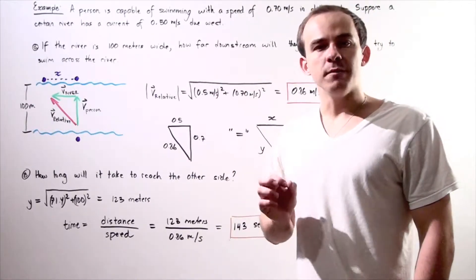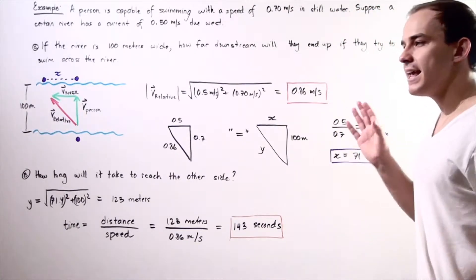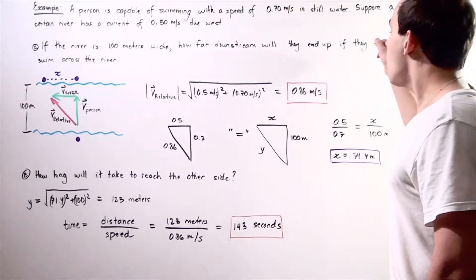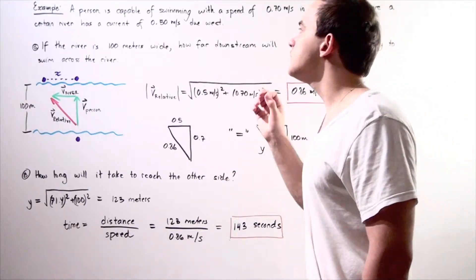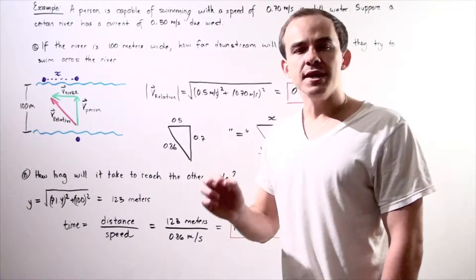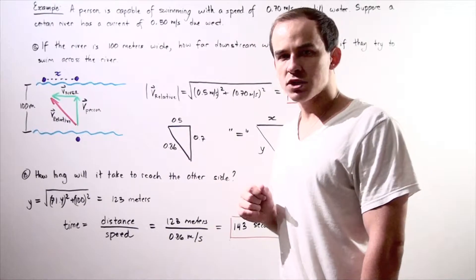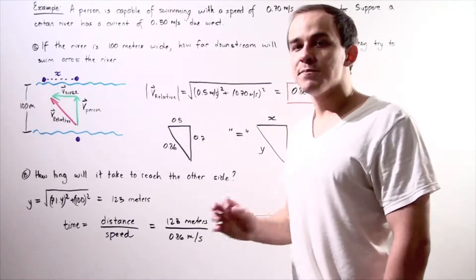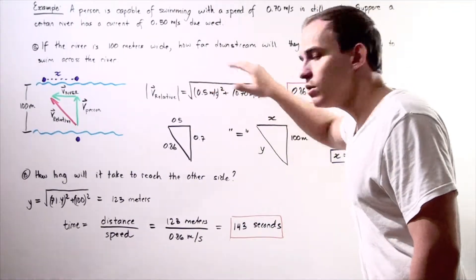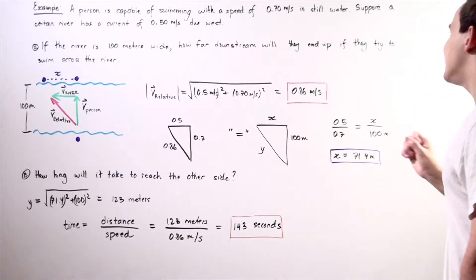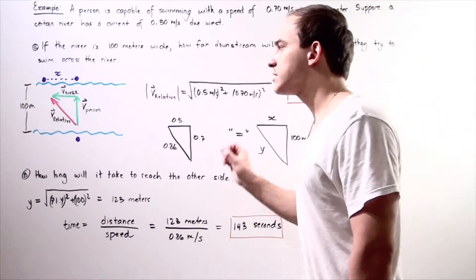A person is capable of swimming with a velocity of 0.7 meters per second in still water. Suppose that the river the person is swimming in has a current of 0.5 meters per second due west. We want to find part A and part B. In part A, if the river is 100 meters wide, how far downstream will the person end up if they try to swim directly across the river?